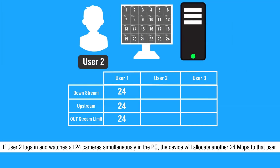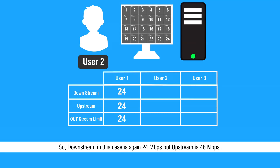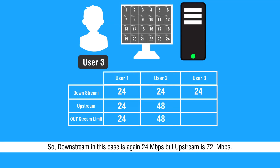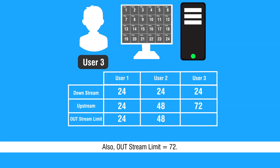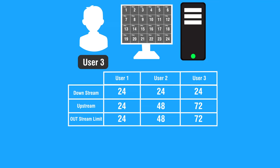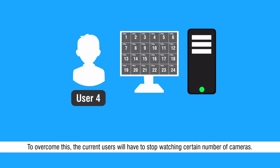If user 2 logs in and watches all 24 cameras simultaneously, the device allocates another 24 Mbps, making upstream 48 Mbps and out-stream limit 48. If user 3 logs in and watches all 24 cameras, the device allocates another 24 Mbps, making upstream 72 Mbps and out-stream limit 72. Now as the out-stream limit is reached, the device will not be able to stream any more cameras. If a user starts a stream anyway, a maximum stream limit reached error will be displayed. To overcome this, the current users will have to stop watching a certain number of cameras.